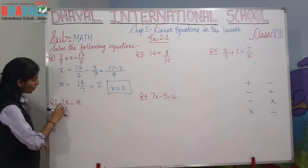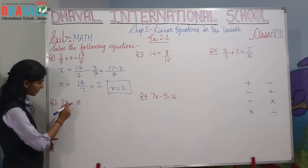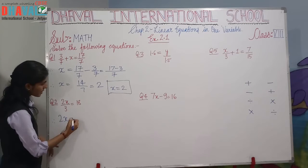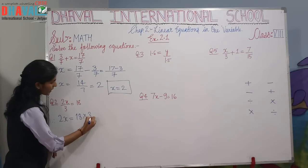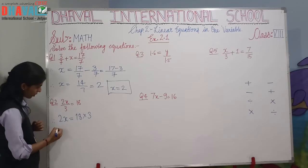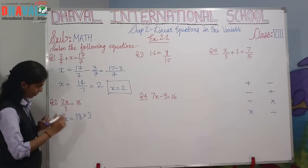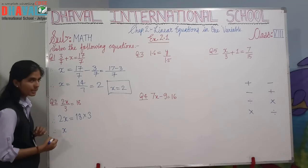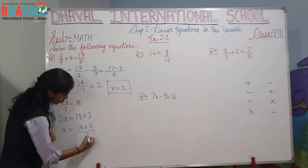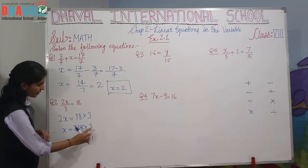The next question is: 2f/3 = 18. To find f, we multiply both sides by 3/2. So f = 18 × 3/2. That gives us f = 27. This is your answer.